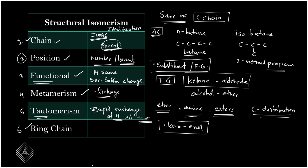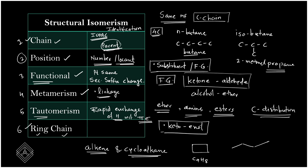The last type is ring-chain isomerism. As the name suggests, one compound is a ring and the other is a chain. Generally, one is an alkene and the other is a cycloalkane, because they have the same degree of unsaturation. For example, cyclobutane and 1-butene (or 2-butene) both have the molecular formula C₄H₈ — one is a ring compound and the other is a chain compound. These are ring-chain isomers.